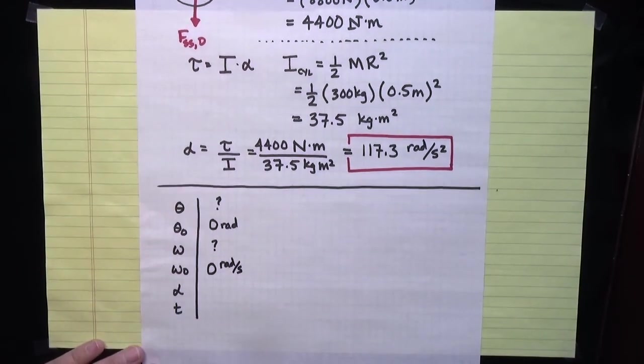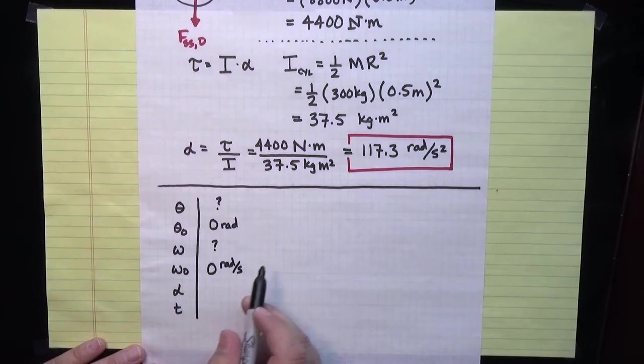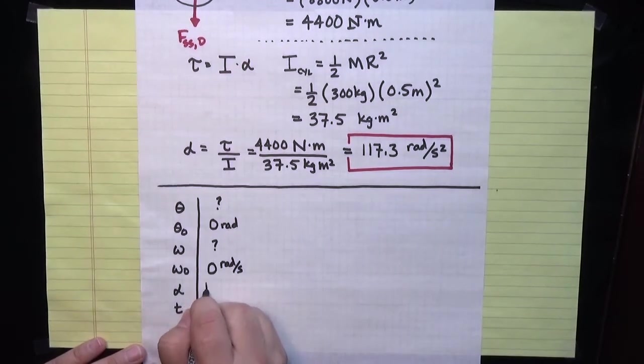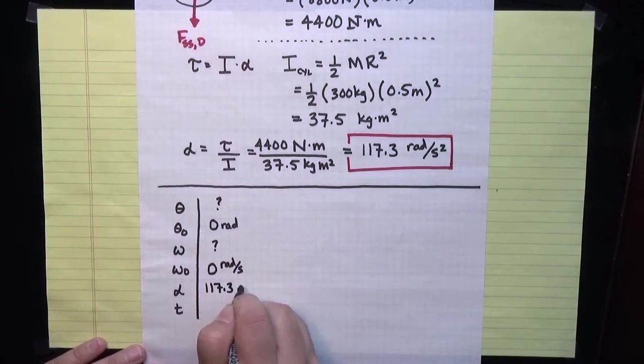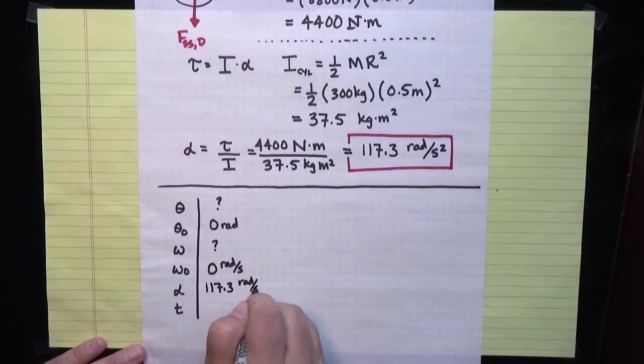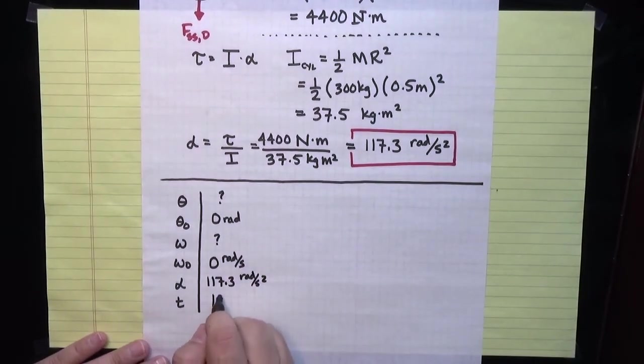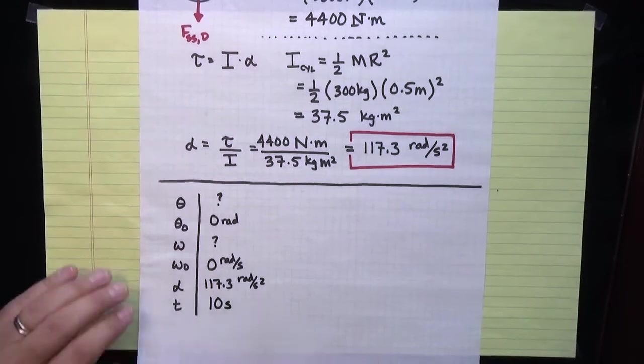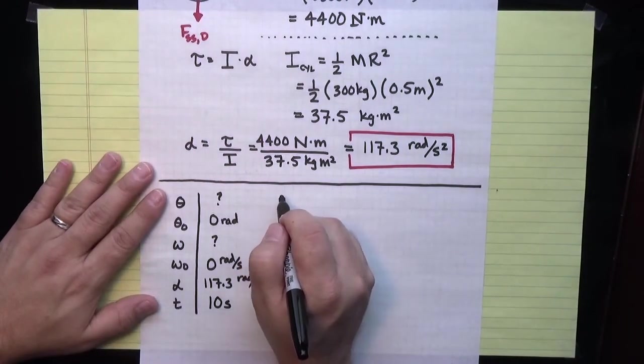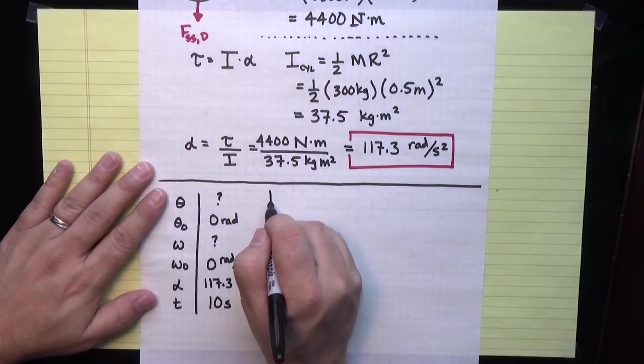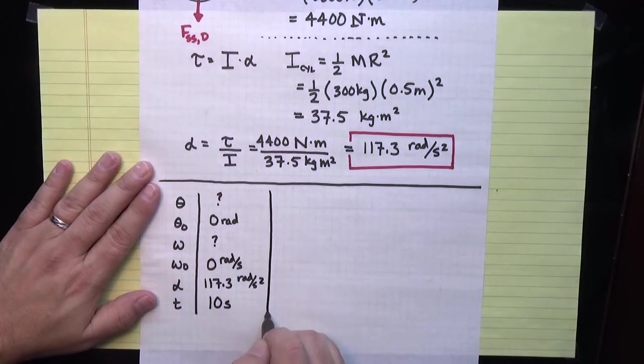We don't know what the final rotational speed is. We're told it begins at rest, so this is zero radians per second for omega initial. I just computed the angular acceleration alpha, this is 117.3 radians per second squared. We're told that the whole problem lasts for 10 seconds as the satellite's spooling out before it breaks.